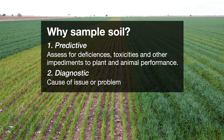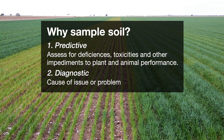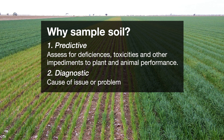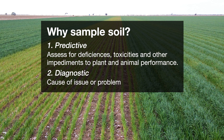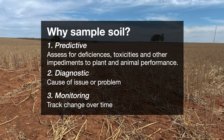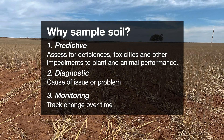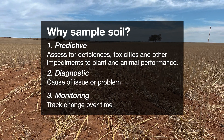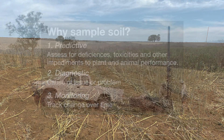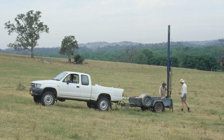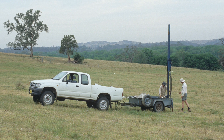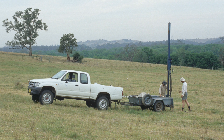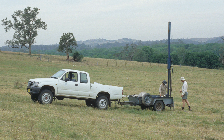Diagnostic sampling is a targeted approach to discover the cause of a problem, so specific areas are a focus — for example, an area with lower than expected yield or signs of crop stress. Monitoring the soil by sampling over an extended period is useful for tracking responses to changes in management practices or long-term trends in soil fertility or limitations. There's a lot of interest in measuring soil carbon for carbon accounting and trading purposes. This type of soil sampling and analysis must be performed by a specifically trained and accredited practitioner and is not covered in this video.